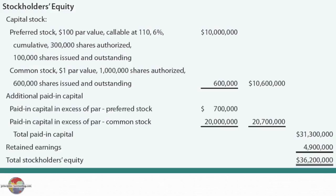The annual dividend is 6% of par, or $6 a share on 100,000 shares, equaling $600,000. Mueller Corporation's notes indicate that last year's and the current year's dividends on the preferred stock had not been paid, so they're owed $1,200,000 for two years. Adding the $11 million call price plus $1,200,000 in dividends, it would take $12,200,000 to liquidate the preferred shareholders. Dispersing that from the $36,200,000 total equity leaves $24 million residual for common shares, divided by 600,000 common shares, giving a $40 book value per share.